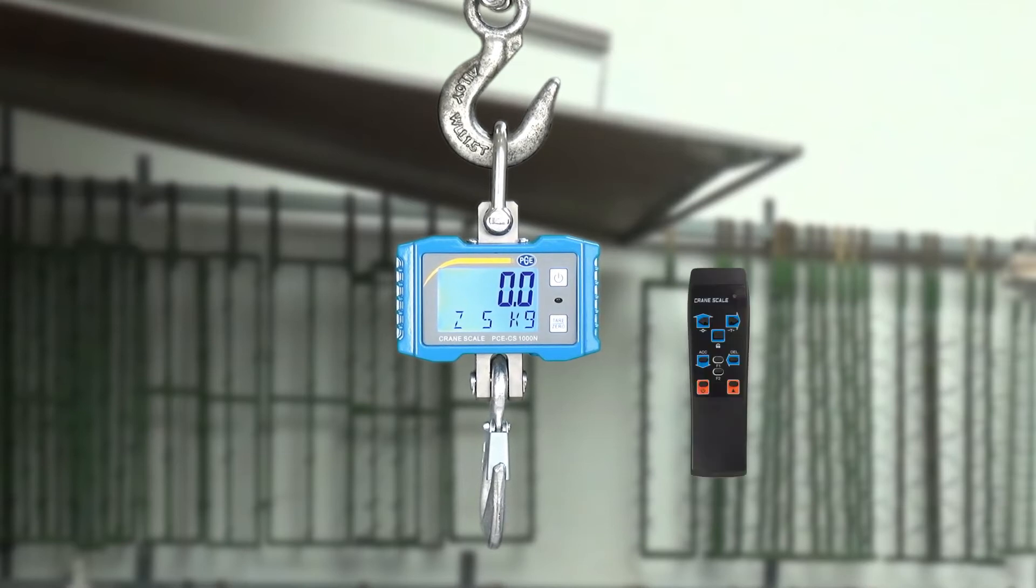With the help of the remote control you can change this weight unit from kilogram. For this we press the F2 button. You can see now pounds and UN. We will work now in kilograms so that I can explain the UN unit to you.